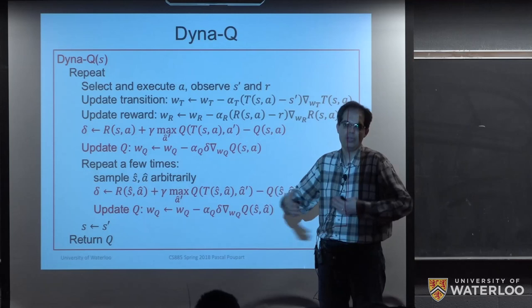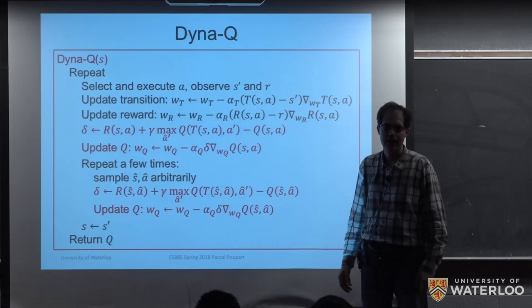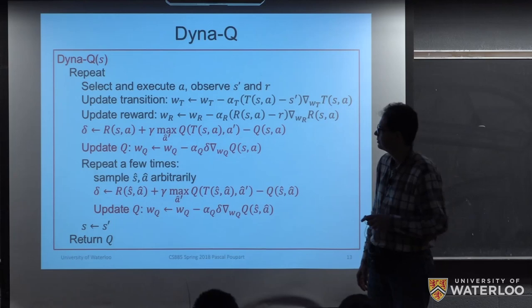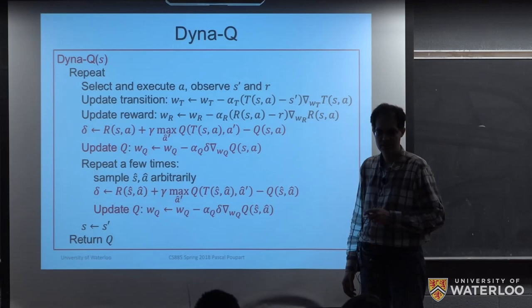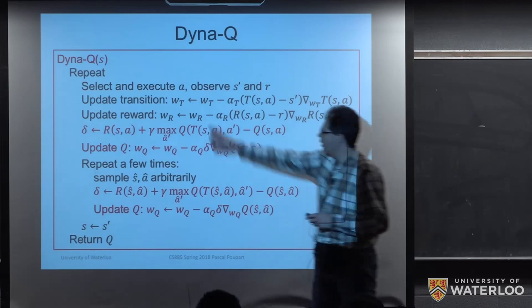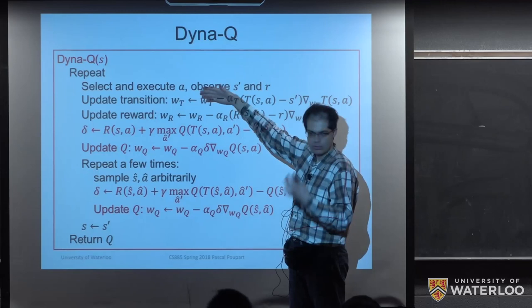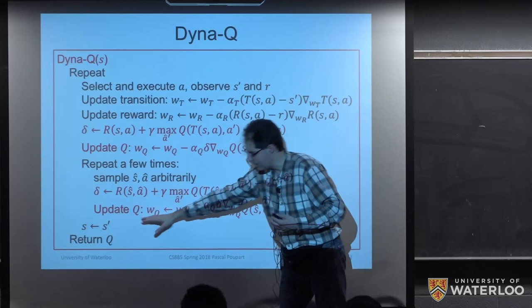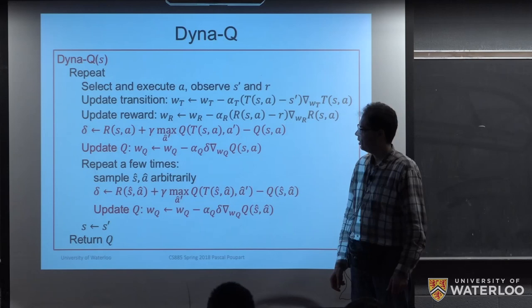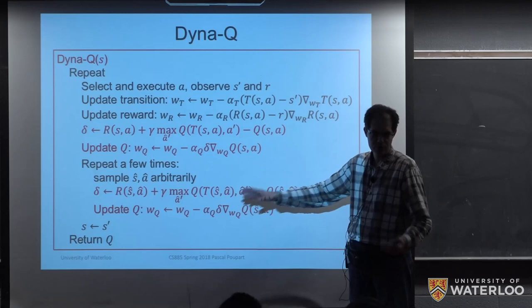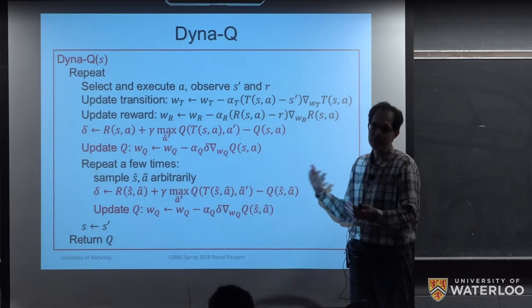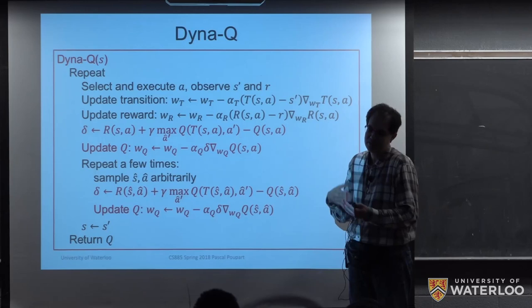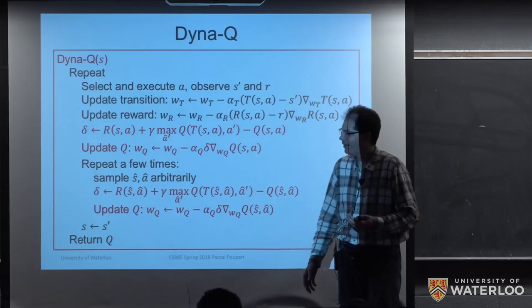A student asks about using the Q function for action selection. Yes — when we write 'select action A', we use some strategy including exploration but based on our Q function estimate. The simplest approach is to use the Q function to compare different actions; using the transition model directly for action selection would involve some form of planning, which is what Monte Carlo Tree Search will do.